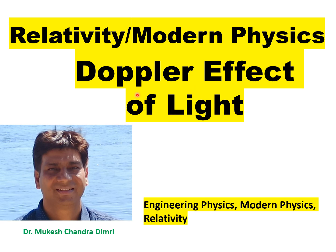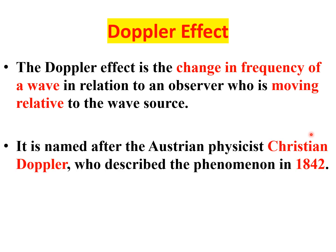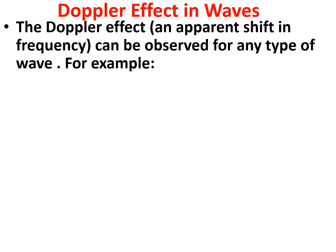In this video I will talk about the Doppler effect of light. The Doppler effect is the change in frequency, or the shift in frequency, of a wave when the observer is moving relative to the source. It was discovered by Christian Doppler, an Austrian physicist, who described this phenomenon in 1842.